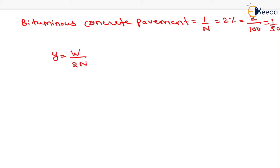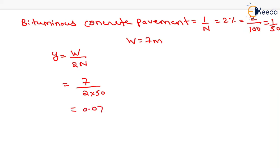In case of bituminous concrete pavement, the width is given as 7 meter. So we put it as 7 divided by 2, and the value of 1/n is equal to 1/50, so we put 50 here. On solving this, we get the value as 0.07 meter. That will be the height of crown in case of bituminous concrete pavement in heavy rainfall area.